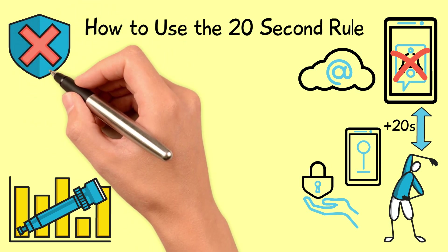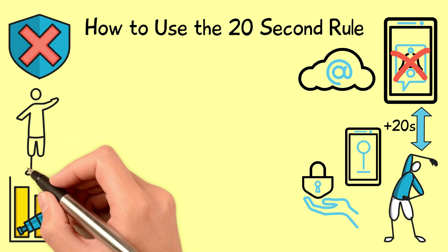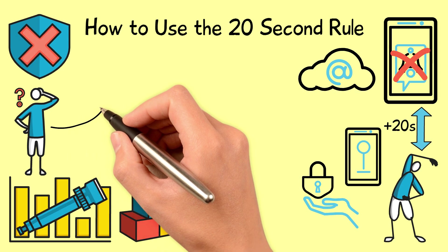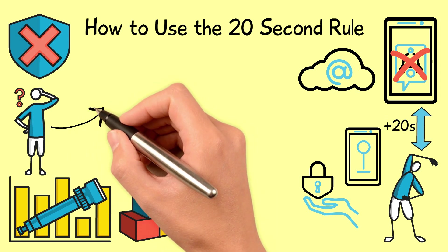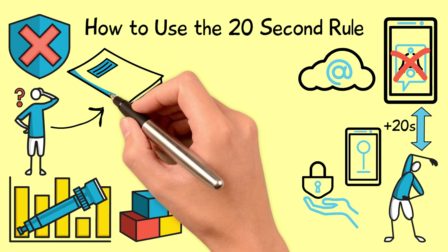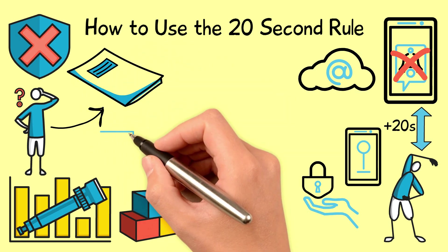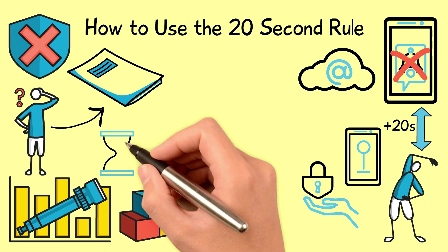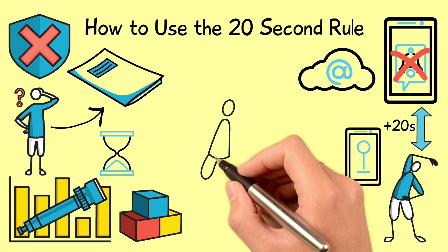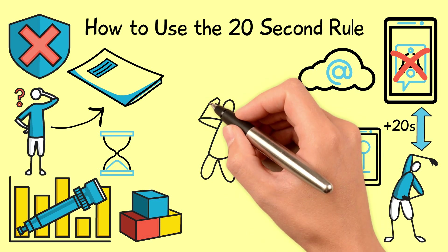Step 3: Assess existing barriers to getting started on your dissertation. Do you have to figure out where you are going to work? Is there clutter that triggers thoughts of other activities? Do you know what your next step is or will you waste valuable time trying to decide whether to read another article, transcribe an interview, or write a new section of your literature review? Can you shave off 20 seconds or more from the time it takes to get going?